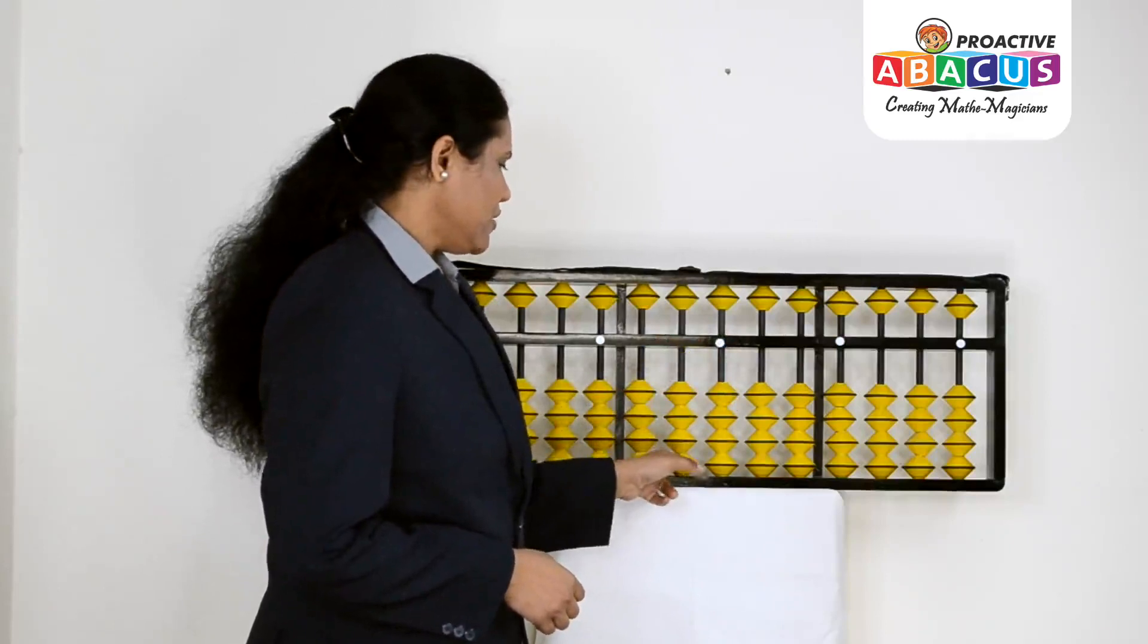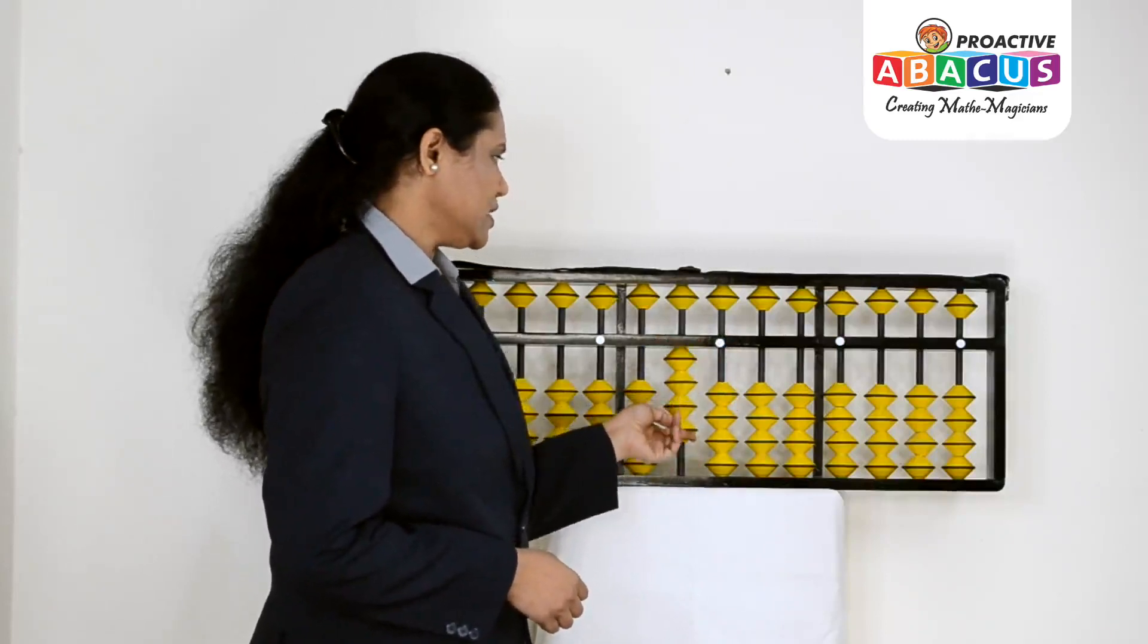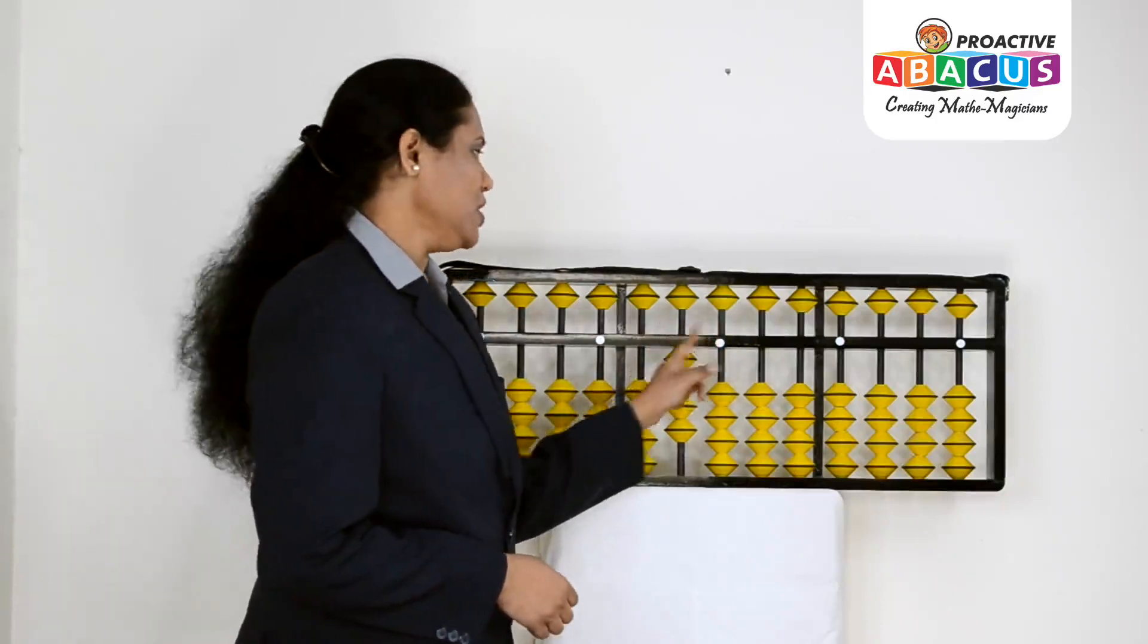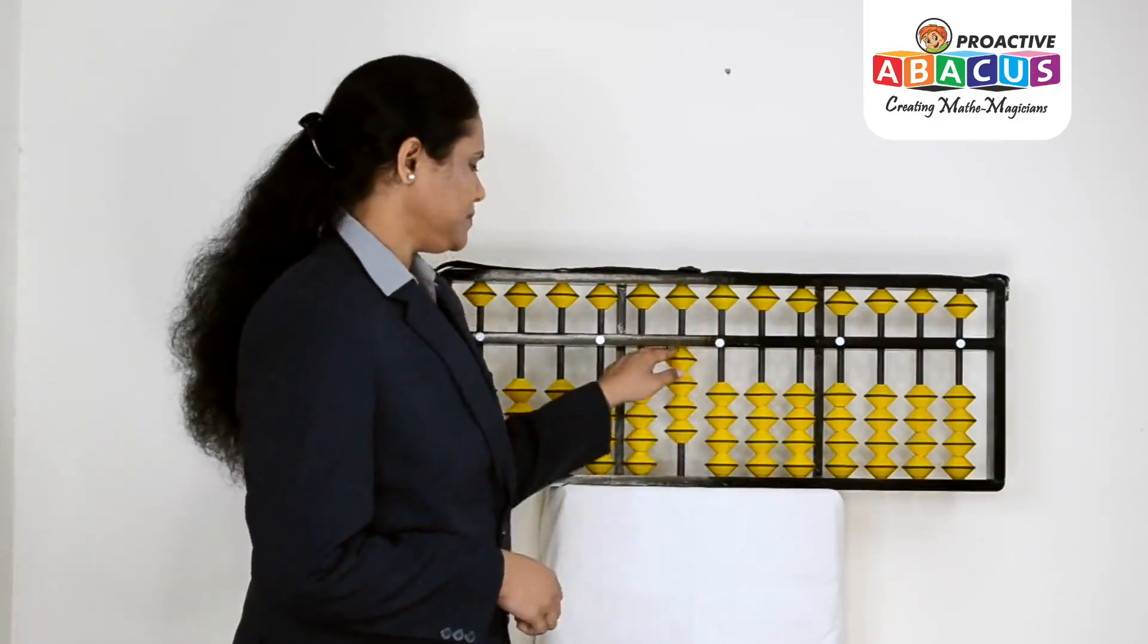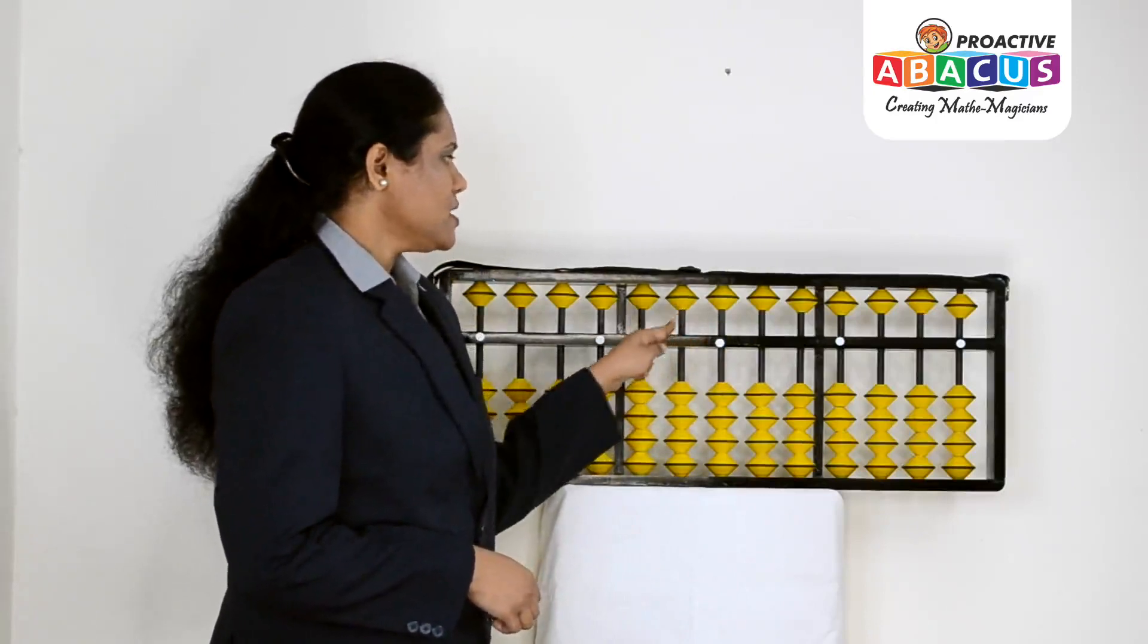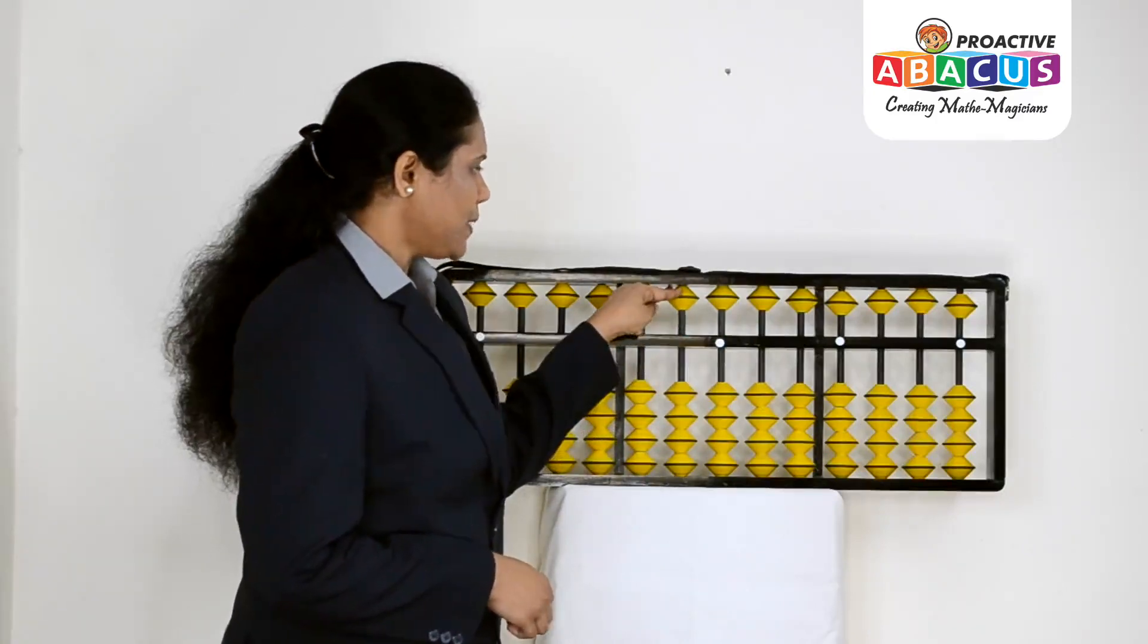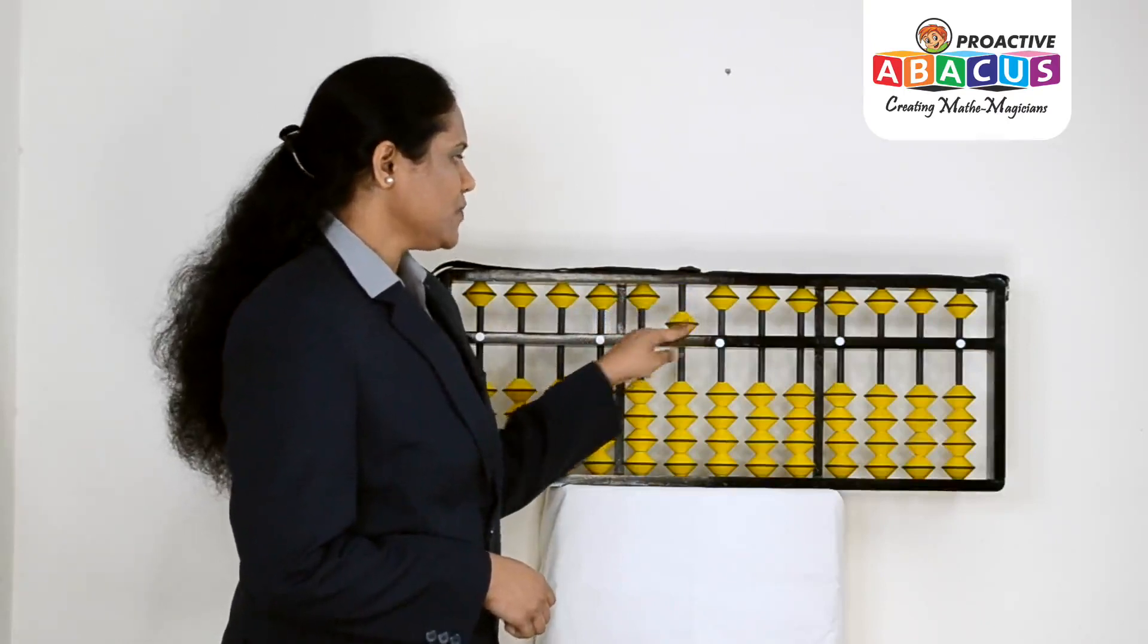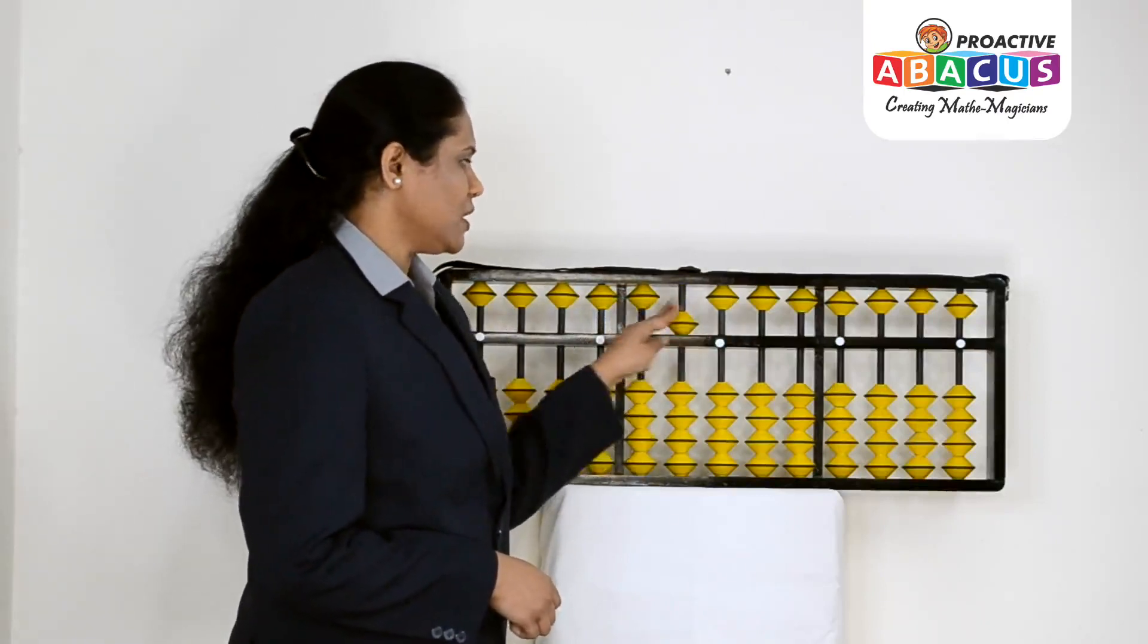For 40, we have 4 beads in tens place and unit place is 0. For 50, we touch the upper deck in tens place and unit place is 0, that's 50.